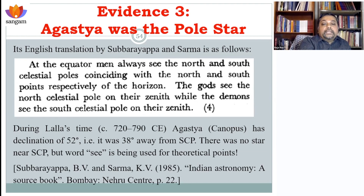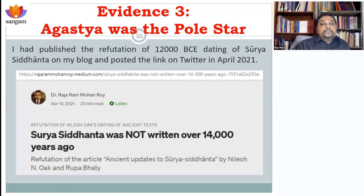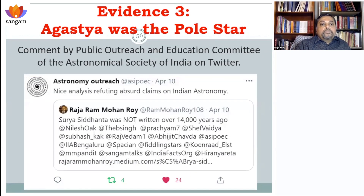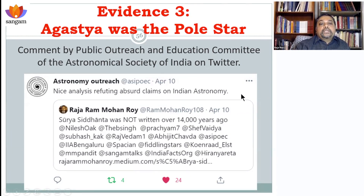When the text says 'Dhruvtara,' they did not mean a real star — they meant these theoretical points. Since these fantastic claims are being made, I wrote an article at my blog site to refute them, and gave the link on Twitter tagging the Astronomical Society of India. The astronomy outreach body responded saying it was a 'nice analysis refuting absurd claims on Indian astronomy.'